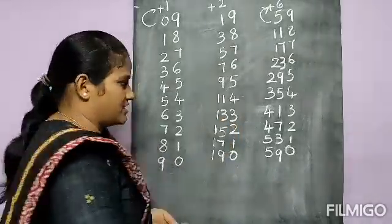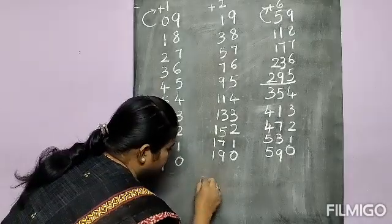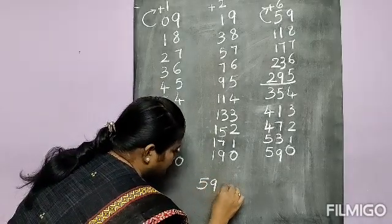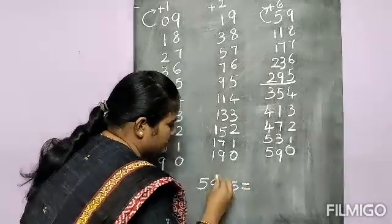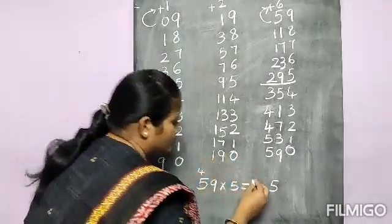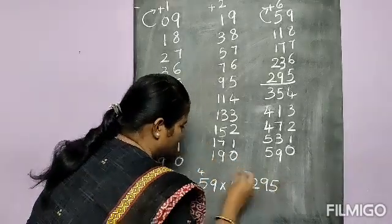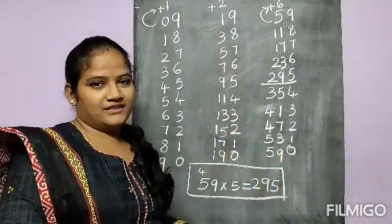Once we will cross-check for your satisfaction. I will take 59 times 5. 5 fives are 25, plus 4 is 29. Now you understood what is the logic?